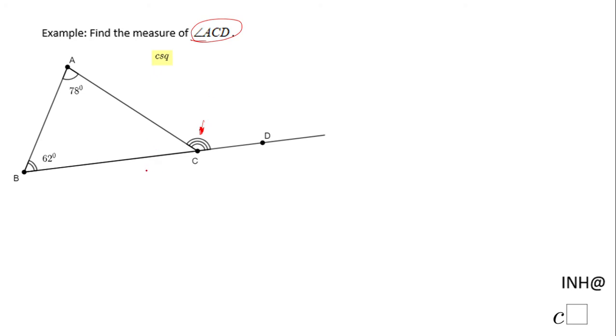First, I'm going to use the fact that the sum of the interior angles of a triangle is 180, and I'm going to find the measure of this angle. The measure of angle A plus the measure of angle B plus the measure of angle ACB equals 180.